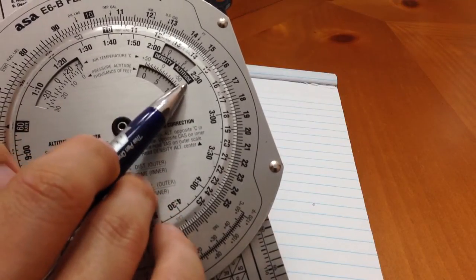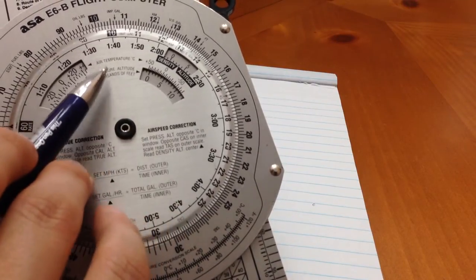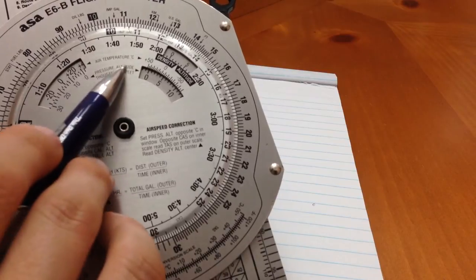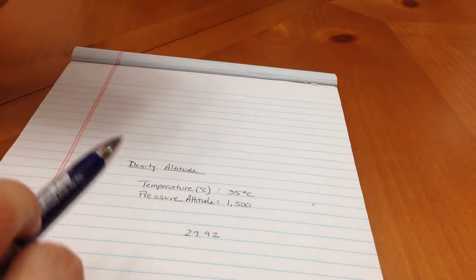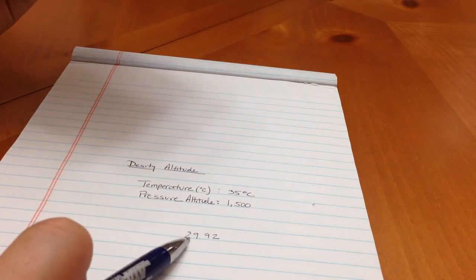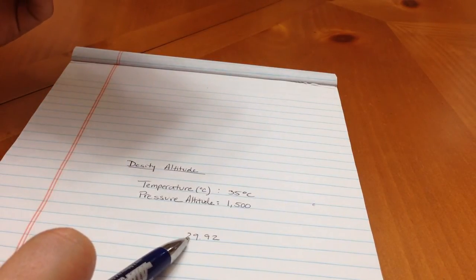So to find density altitude we need our air temperature in Celsius and our pressure altitude. How do we find pressure altitude? Well that's simple. Simply go to your altimeter and put 29.92 and that would read your pressure altitude.